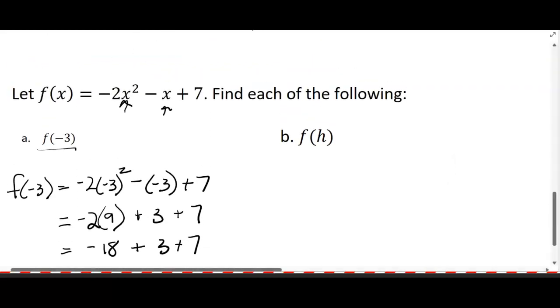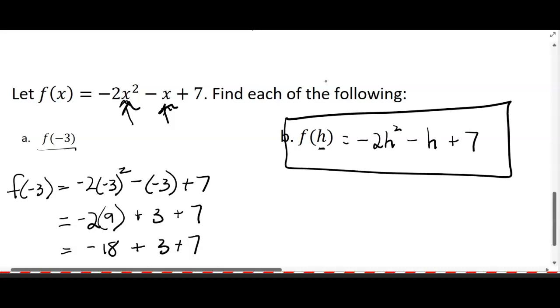The next one, same thing. We're finding f(h). So we're going to put h in for the x's. This should have been the easiest problem on the test. -2h² - h + 7. You're done. Just had to make x's into h's.